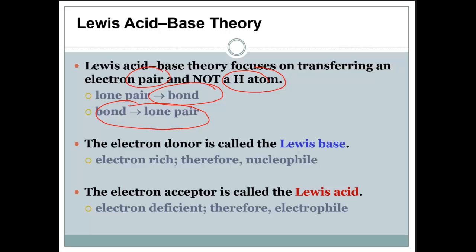The electron donor is called a Lewis base. This is the electron-rich, therefore it's called a nucleophile, meaning that it's wanting something positive. It loves things that are positive.